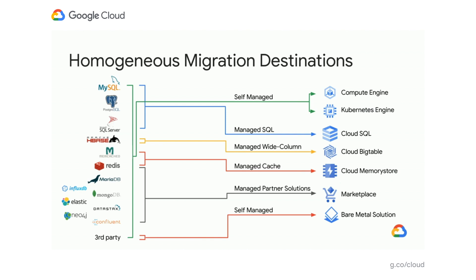Looking at database options on Google Cloud: on the left you have many databases — open source, third-party, relational, key-value, column store, caches, streaming. On the right, you can end up with infrastructure-as-a-service or managed databases. For homogeneous migration, check if your database is supported by our fully managed services or through our managed partners. Any database can also be self-managed on Compute Engine or Kubernetes Engine.